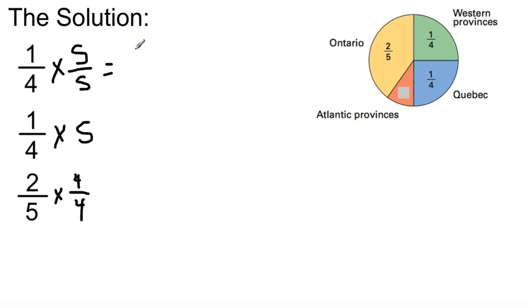You're going to have five over twenty. Same with this: five over twenty. Two times four is eight over twenty. Now we will add these together.